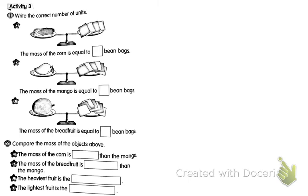Activity Three: write the correct number of units. Picture A — corn: the mass of the corn is equal to how many bean bags? One, two, three, four — four bean bags. Picture B — mango: the mass of the mango is equal to how many bean bags? One, two, three, four, five, six — six bean bags.